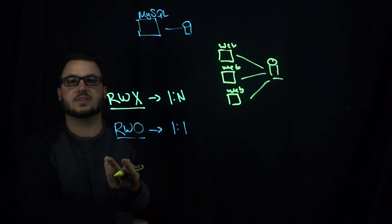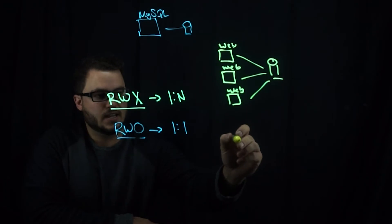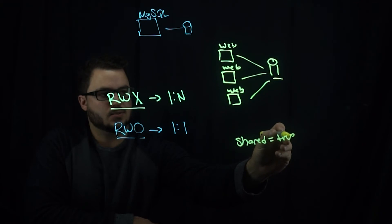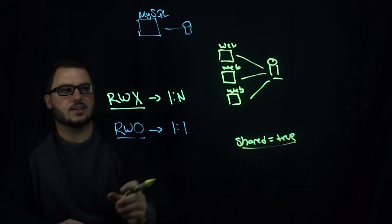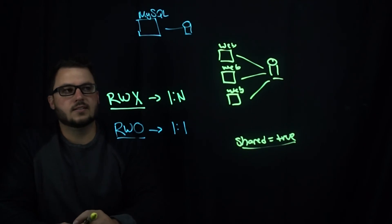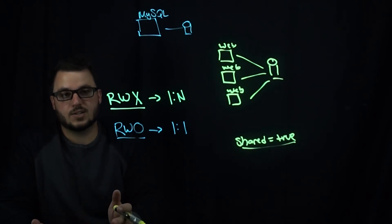Right, and when you provision Portworx volumes, you can just put the shared equals true parameter. And that will make sure that you can connect to more than one container or application.